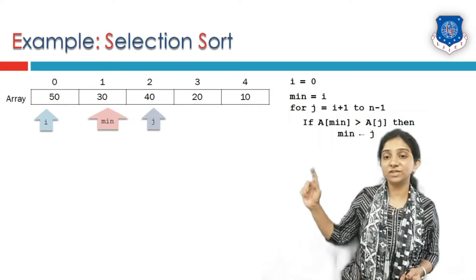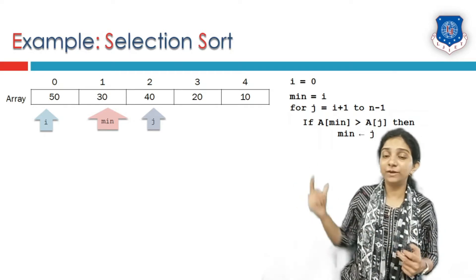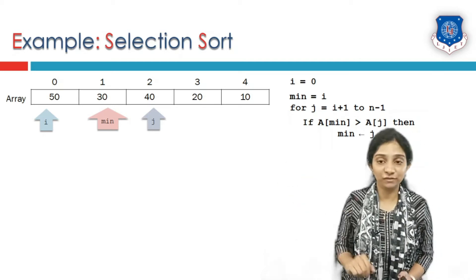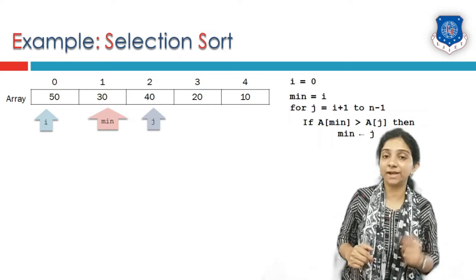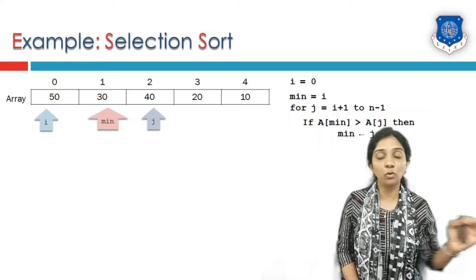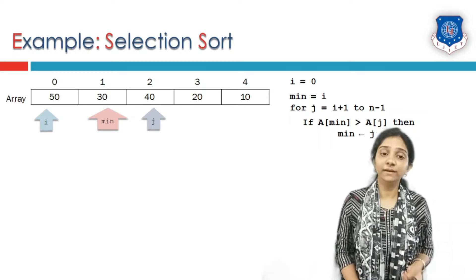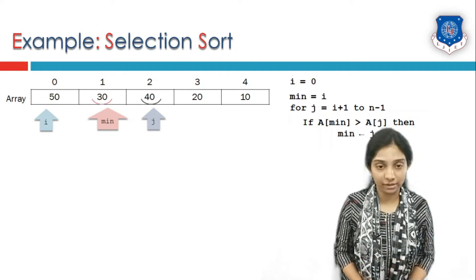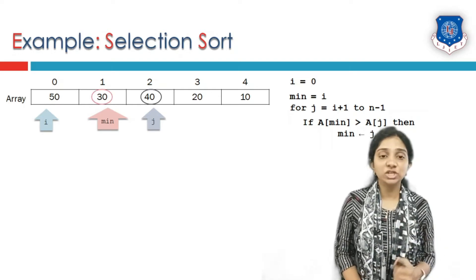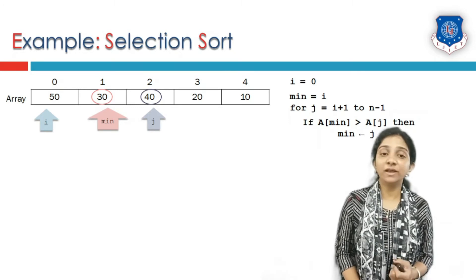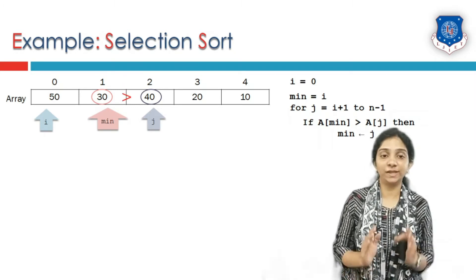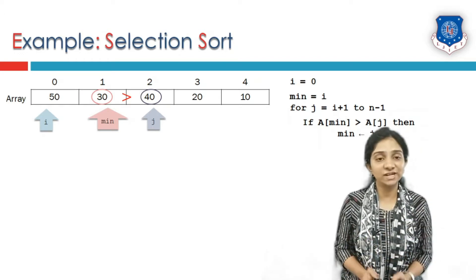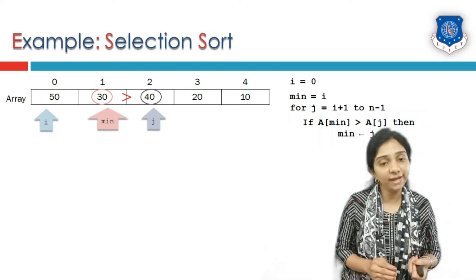Instead of manually initializing and looping j, we use a for loop: for j equal to i plus 1 to n minus 1, meaning j goes up to the last element. Again at this point we compare the min element with the jth element. Min element is 30, jth element is 40. Is 30 greater than 40? No. In this case the min element is pointing to the minimum element and j is the larger one, so no need to change our min index.